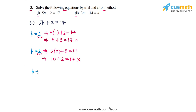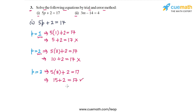Now let's take P equal to 3. For P equal to 3, on the LHS we get 5 times 3 plus 2, and on the RHS we have 17. 5 times 3 is 15, so 15 plus 2 on the LHS and 17 on the RHS. This relation is mathematically correct — 15 plus 2 is equal to 17 — which means P equal to 3 satisfies the equation. The solution is that the value of P is 3.